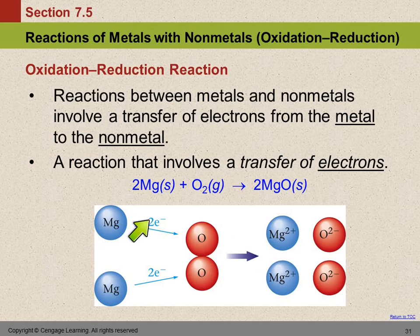The magnesium gives two electrons to this oxygen. Then it becomes magnesium ion with a 2+ charge, and the oxygen becomes oxide ion with a 2- charge. Another magnesium gives two electrons to the other oxygen, and they form the same ions. Now we have positive and negative charges. They attract each other, and they form a compound. This is a reaction involving a transfer of electrons.